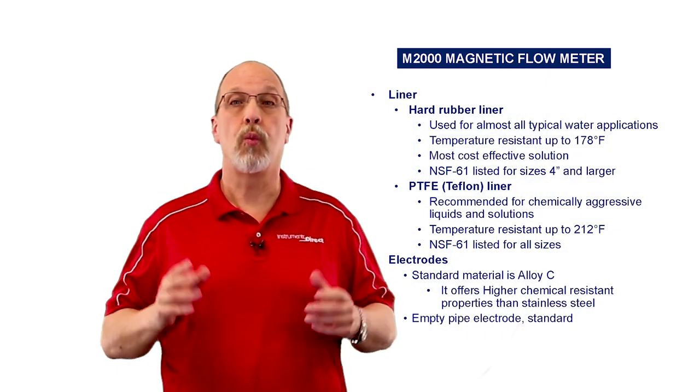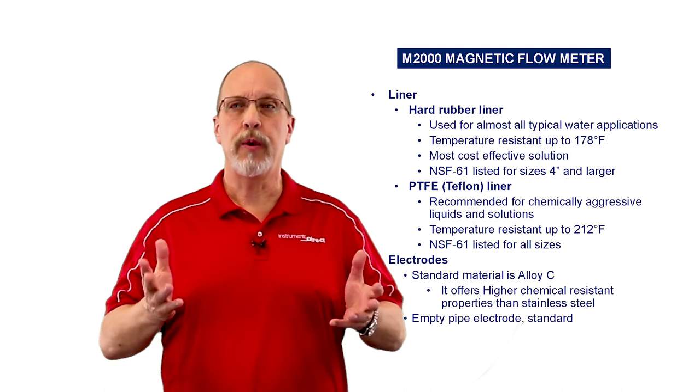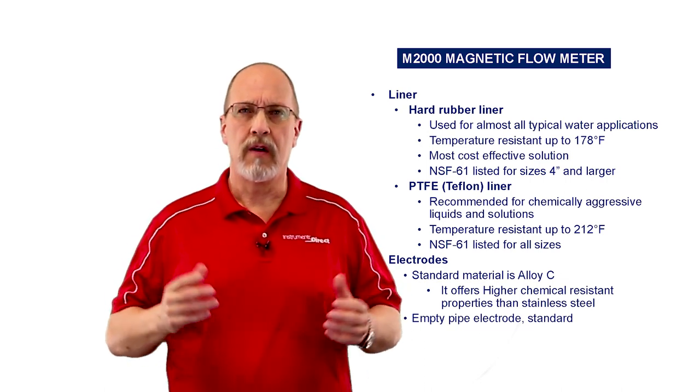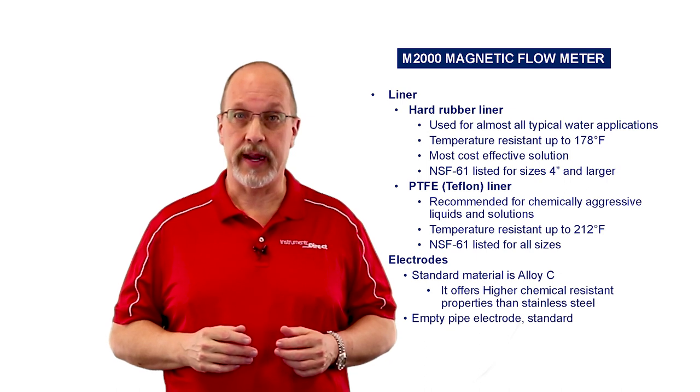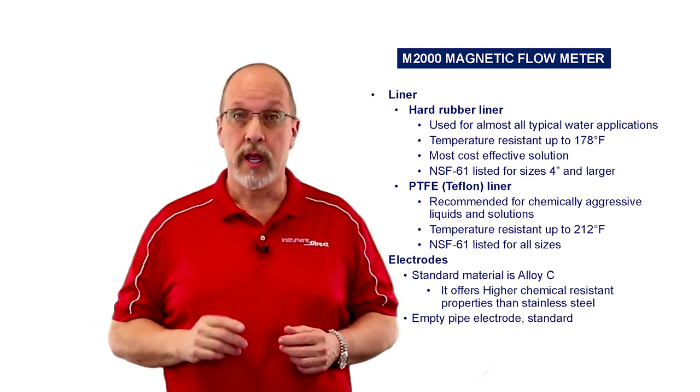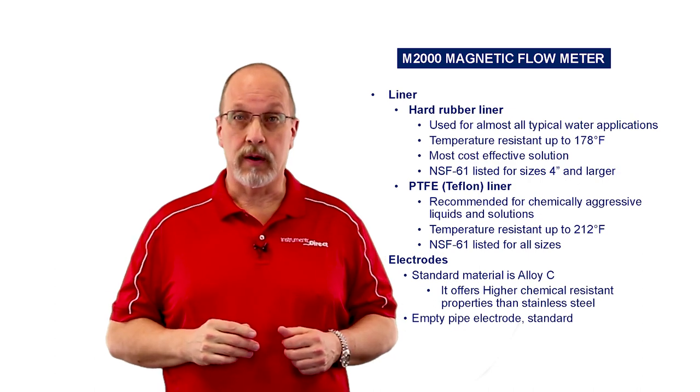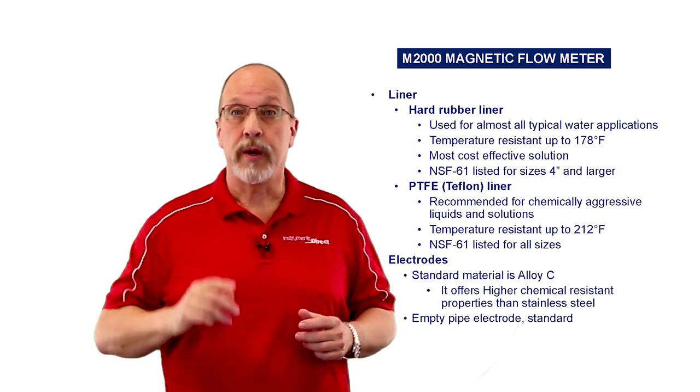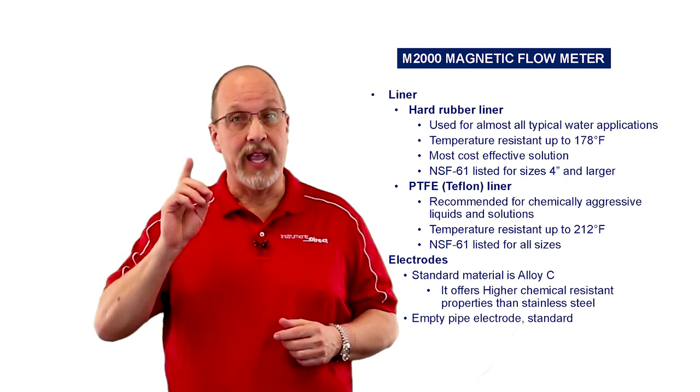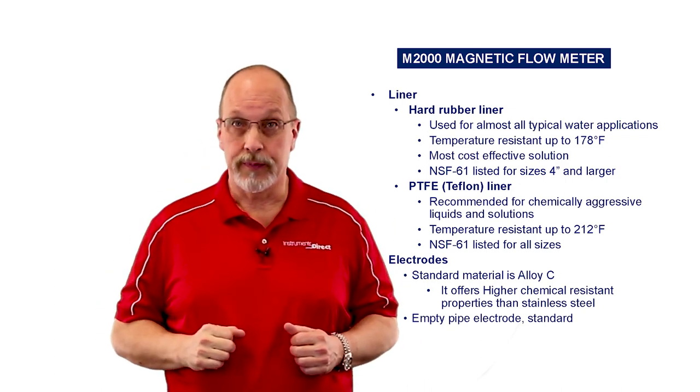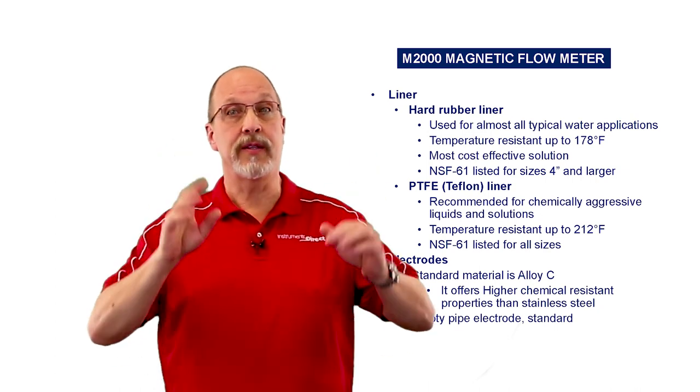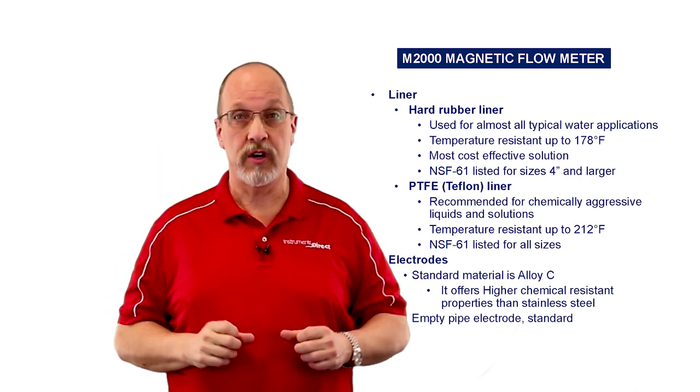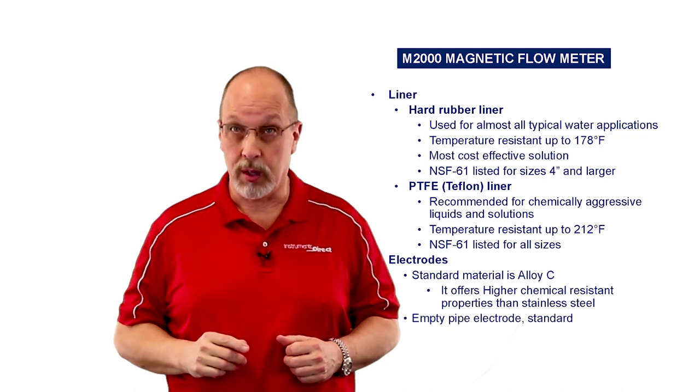Now for most water applications, you would use the rubber liner for process temperatures up to 178 degrees Fahrenheit. But for higher temperature applications, you can use the PTFE liner up to 212 degrees Fahrenheit. You may also want to consider the PTFE liner for chemically aggressive applications. Also, note the M2000 also has the infamous NSF-61 certification for those drinking water compliance applications.